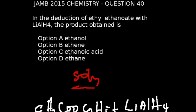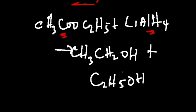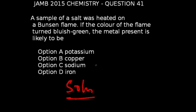Question number 40 of JAM 2015 chemistry: In the reduction of ethyl ethanoate with lithium aluminum hydride, the product obtained is — writing the equation: ethyl ethanoate reacting with lithium aluminum hydride gives ethanol. The correct answer to this question is option A, which is ethanol.